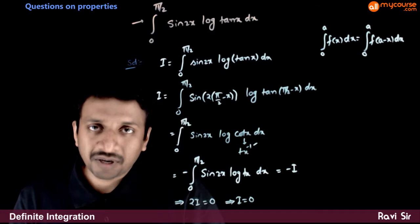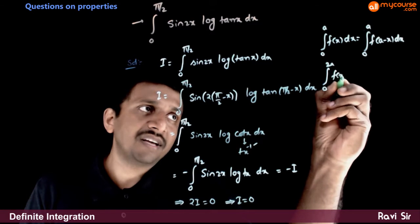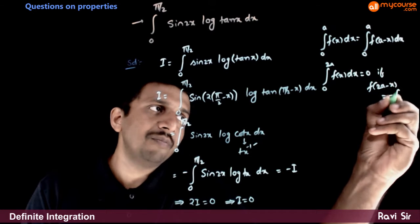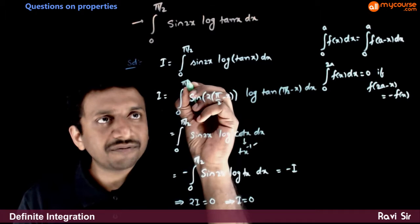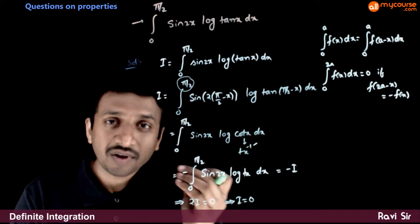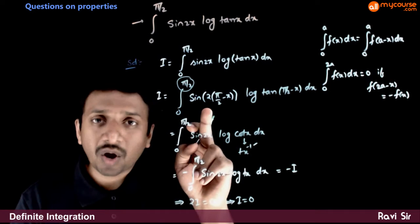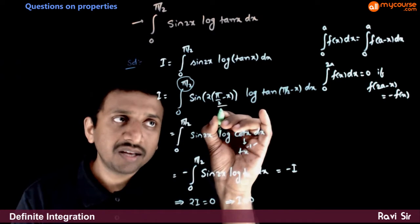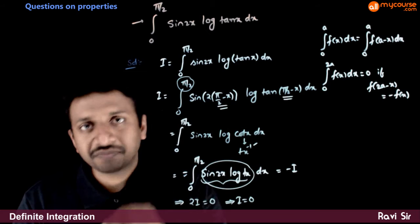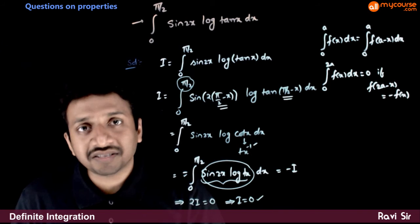If we use a different formula: the integral from 0 to 2a of f(x) dx equals 0 if f(2a - x) equals minus f(x). That is, if you substitute the upper limit minus x in place of x and get a minus sign outside, the value of the integral will be equal to 0. That is exactly what has happened here — putting π/2 minus x in place of x gives a minus sign and the same function, so f(2a - x) turned out to be minus f(x), and hence the integral equals 0.